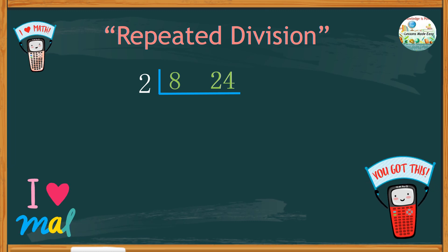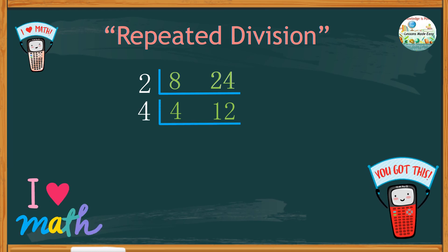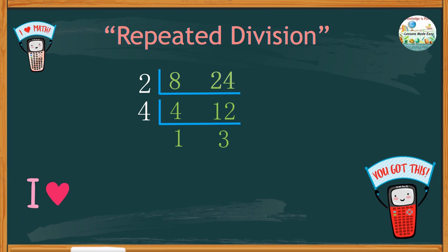Eight divided by two, we get four, and half of twenty-four is twelve. Four and twelve can still be divided further. We can use four. And four divided by itself, we get one. While twelve divided by four, we get three.